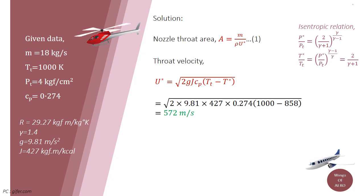Now, substitute the values and solve. We get the throat velocity which is 572 meter per second.